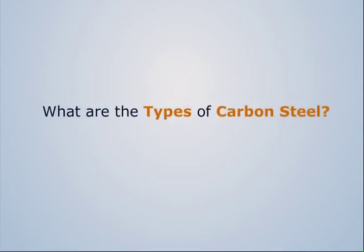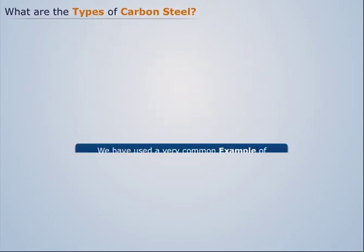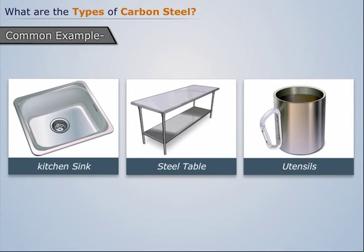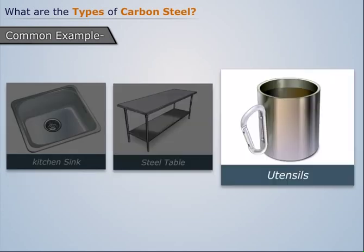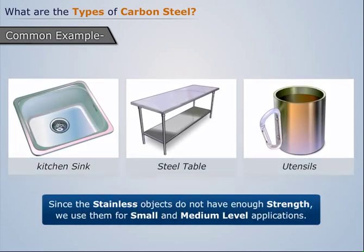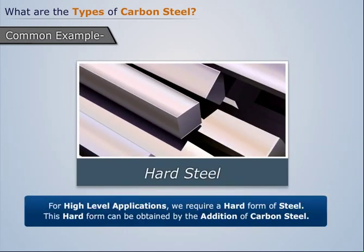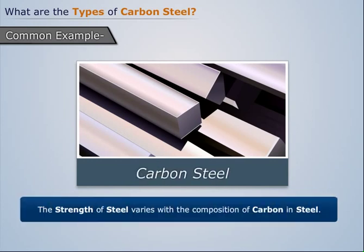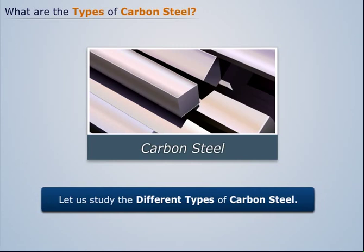What are the types of carbon steel? Stainless steel is a very common example used in our day-to-day lives for making components such as kitchen sinks, tables, and utensils. Since stainless steel objects do not have enough strength, we use them for small and medium level applications. For high level applications, we require a hard form of steel, obtained by the addition of carbon. The obtained steel is called carbon steel. The strength of steel varies with the composition of carbon in steel.